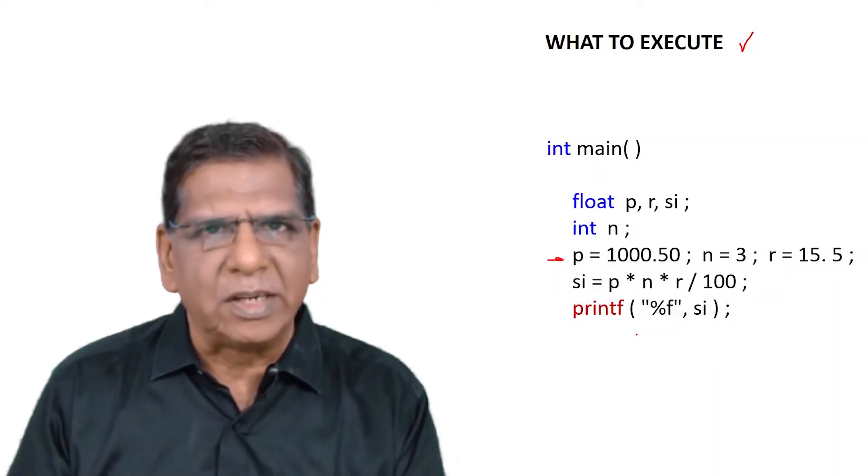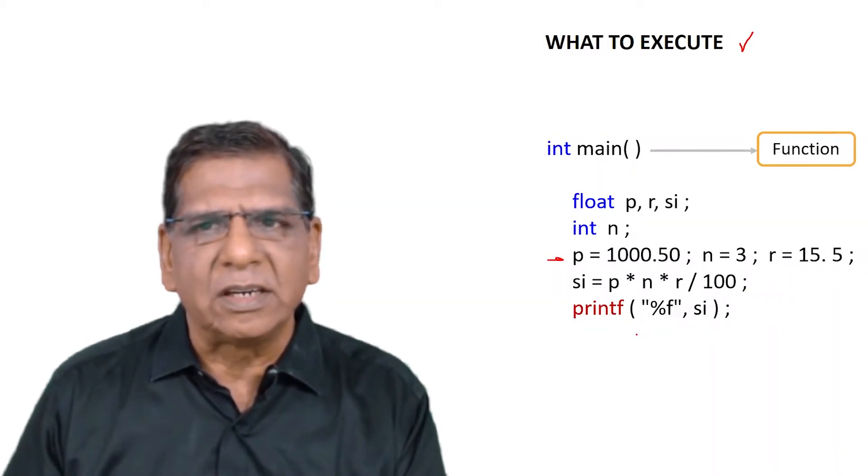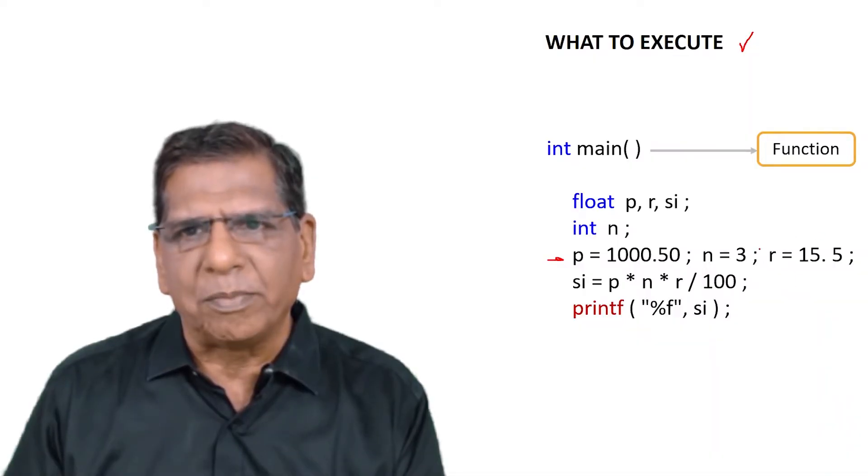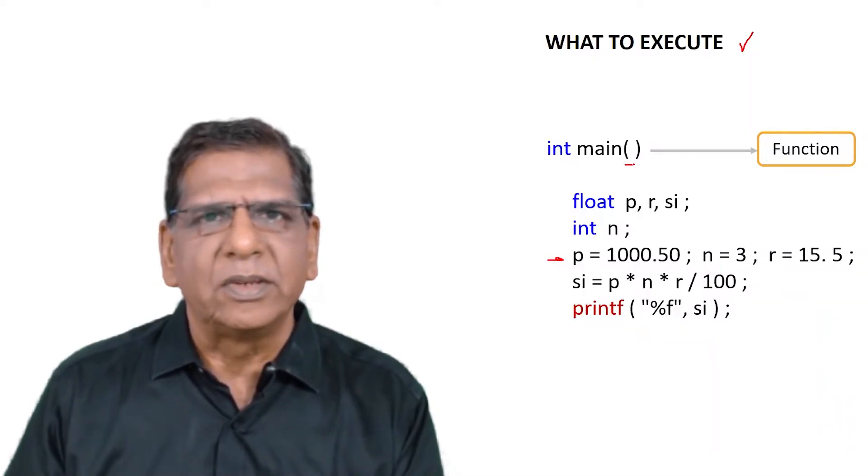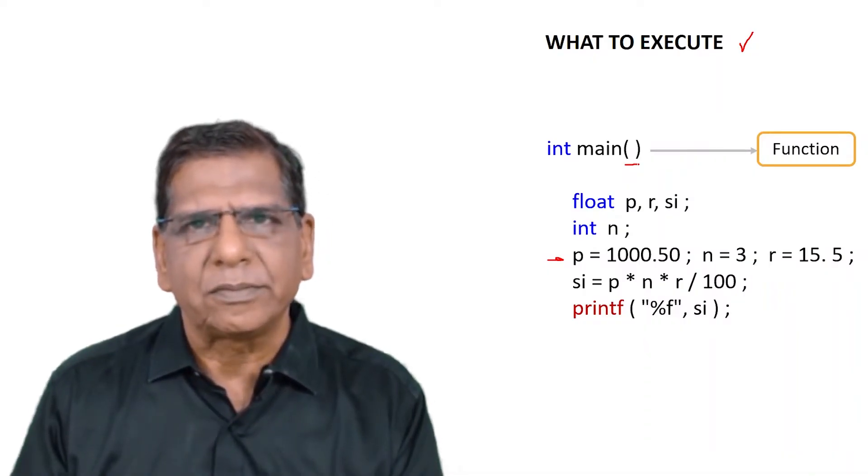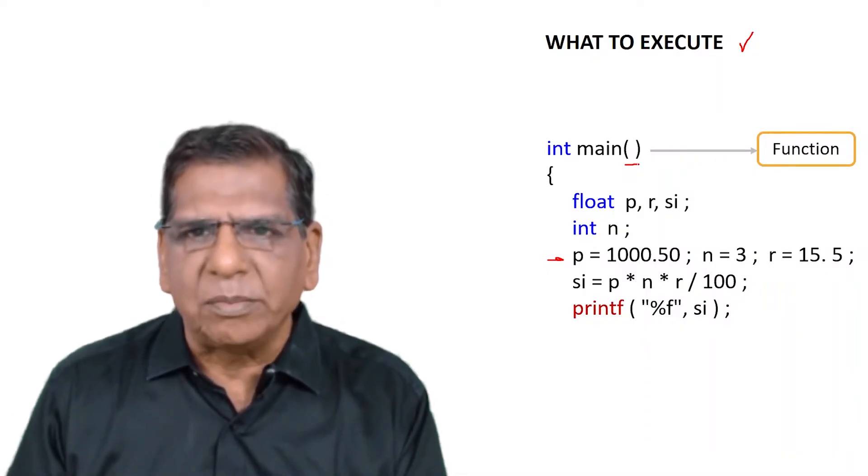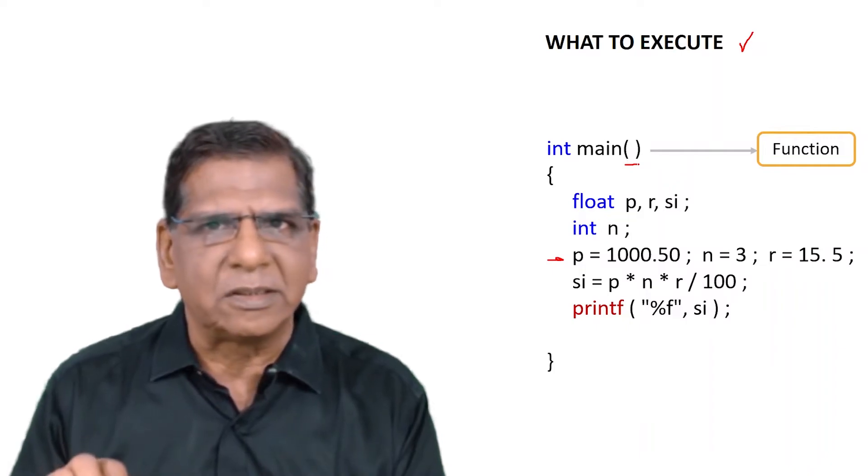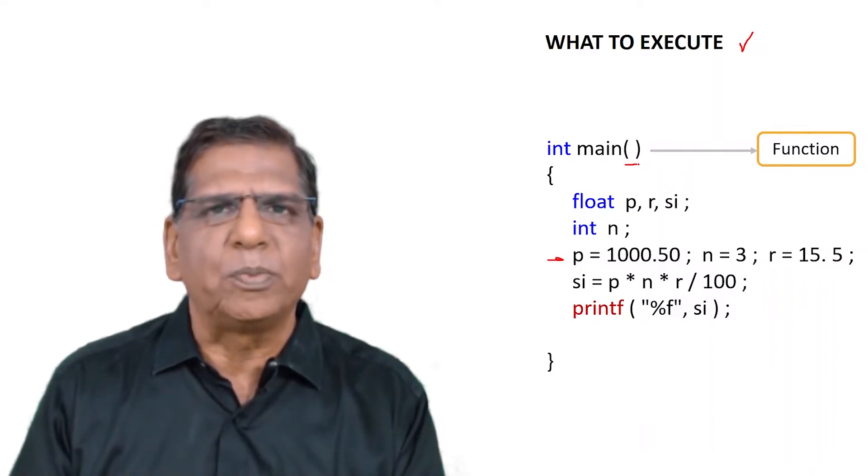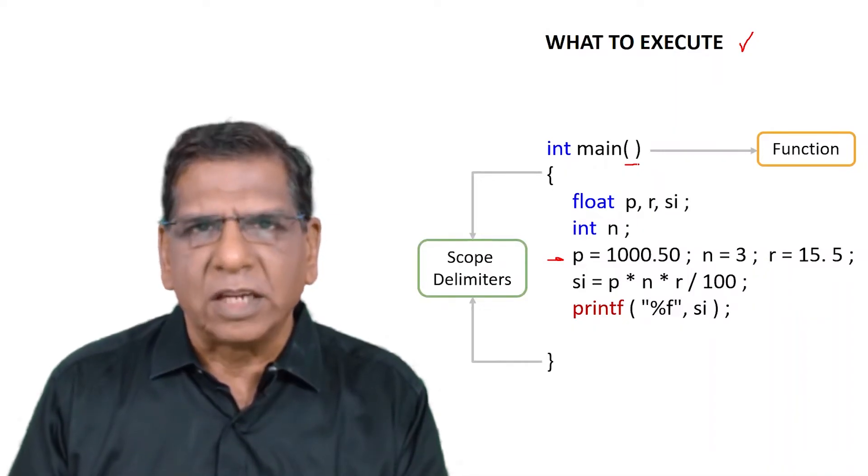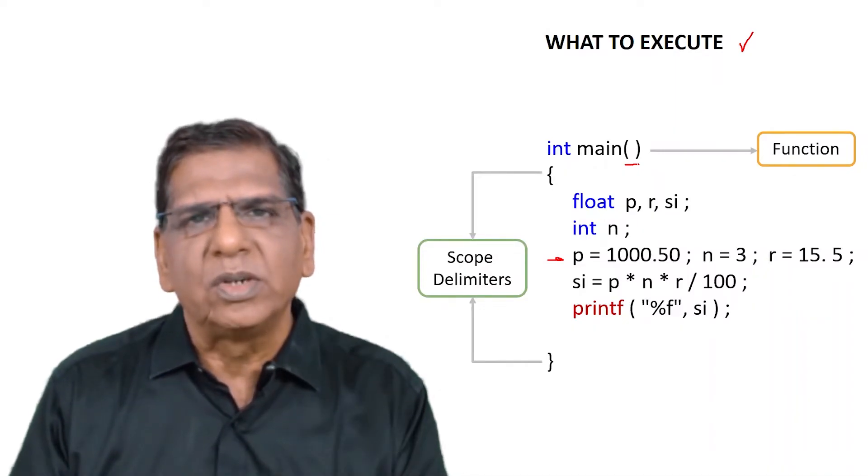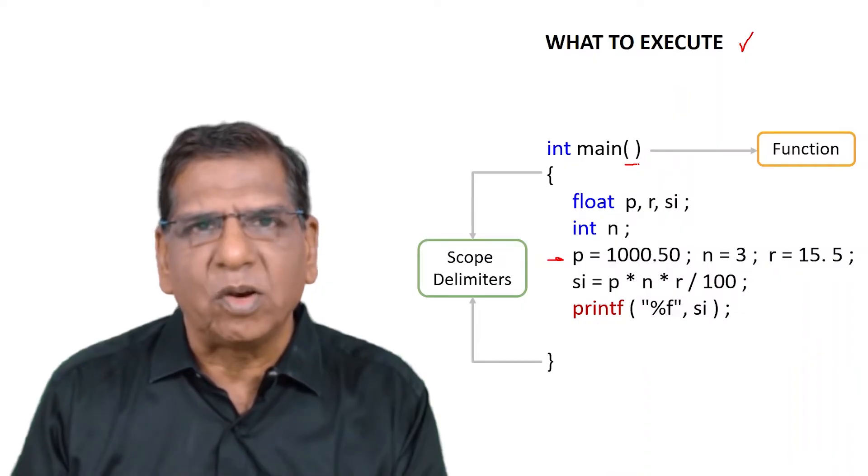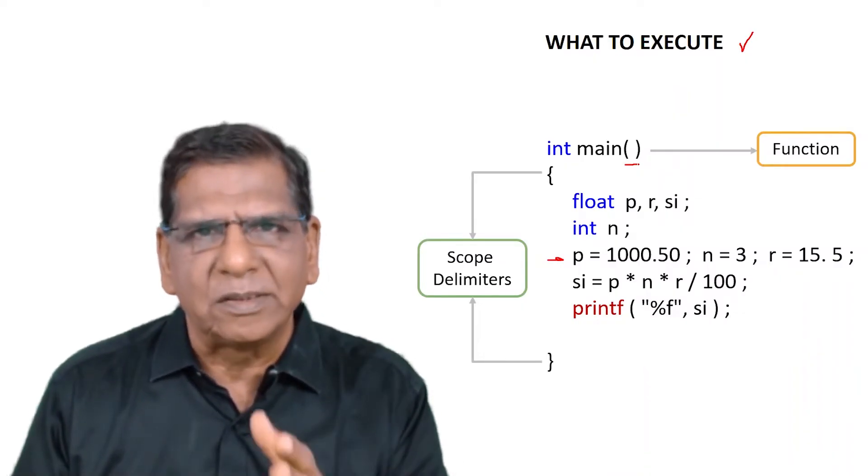Main for that matter is known as a function. Why is it a function? Well, because in C programming the rule is that any word followed by a pair of parenthesis is always known as a function. So main hence qualifies as a function. Then what statements belong to main? That's indicated by enclosing all those statements within a pair of braces. These braces are known as scope delimiters. They are so known because they basically are used to delimit the scope of main, indicate the scope of main, indicate what statements belong to main. Whatever falls within those pair of braces belongs to main.